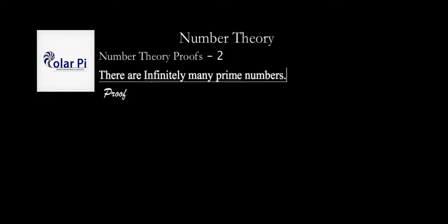Hey guys, welcome. So in number theory proofs part one, we used an indirect proof to show that the square root of two is irrational. And in this video, we're again going to use an indirect proof, but to show something much cooler, which is that there are infinitely many prime numbers.